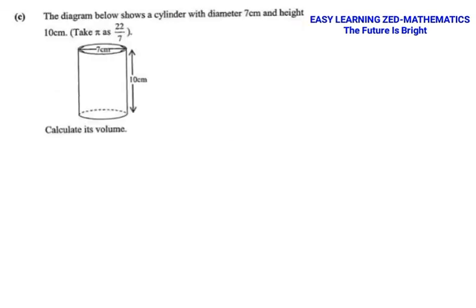The second question comes from 2019 Paper 2. The question states: the diagram below shows a cylinder with diameter 7 centimeter and height 10 centimeter. Take pi as 22 over 7. We are asked to calculate the volume of this cylinder. Just like with other prisms — triangular or rectangular — the formula used for a prism and a cylinder is the same: volume equals area of the base multiplied by height.